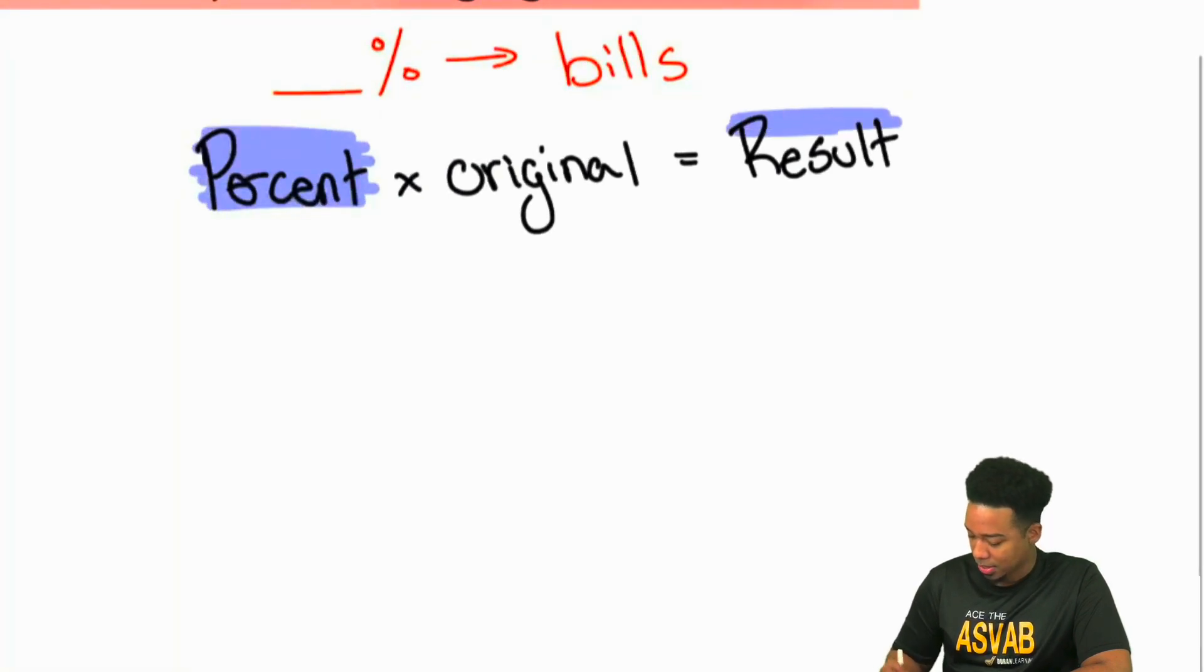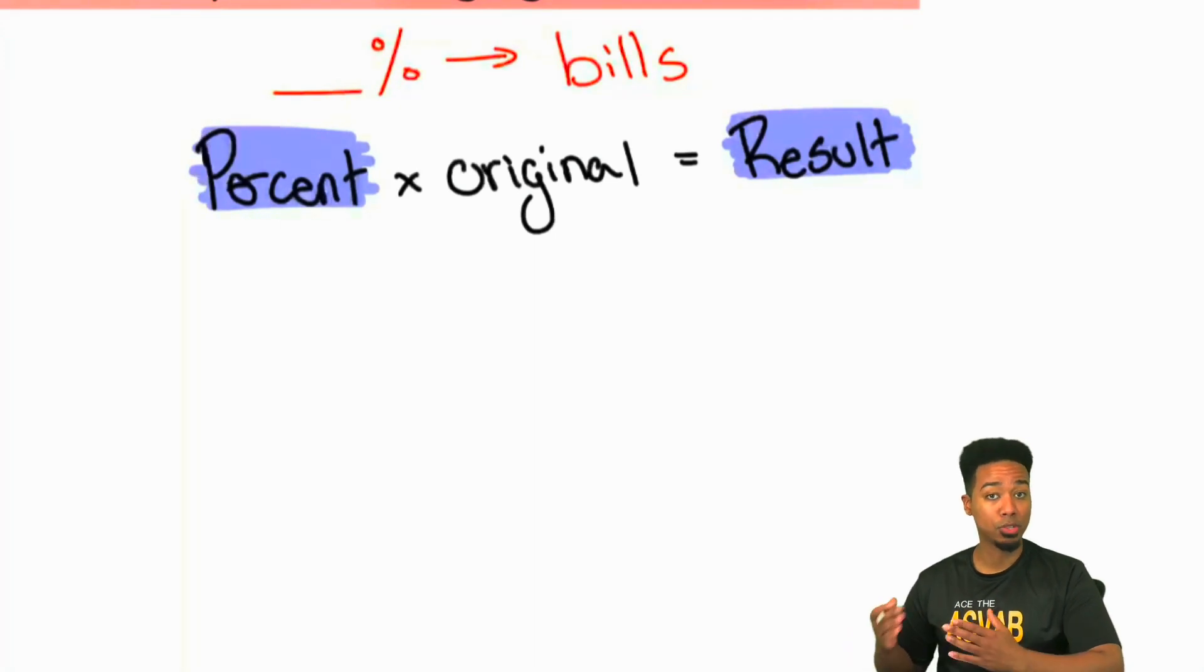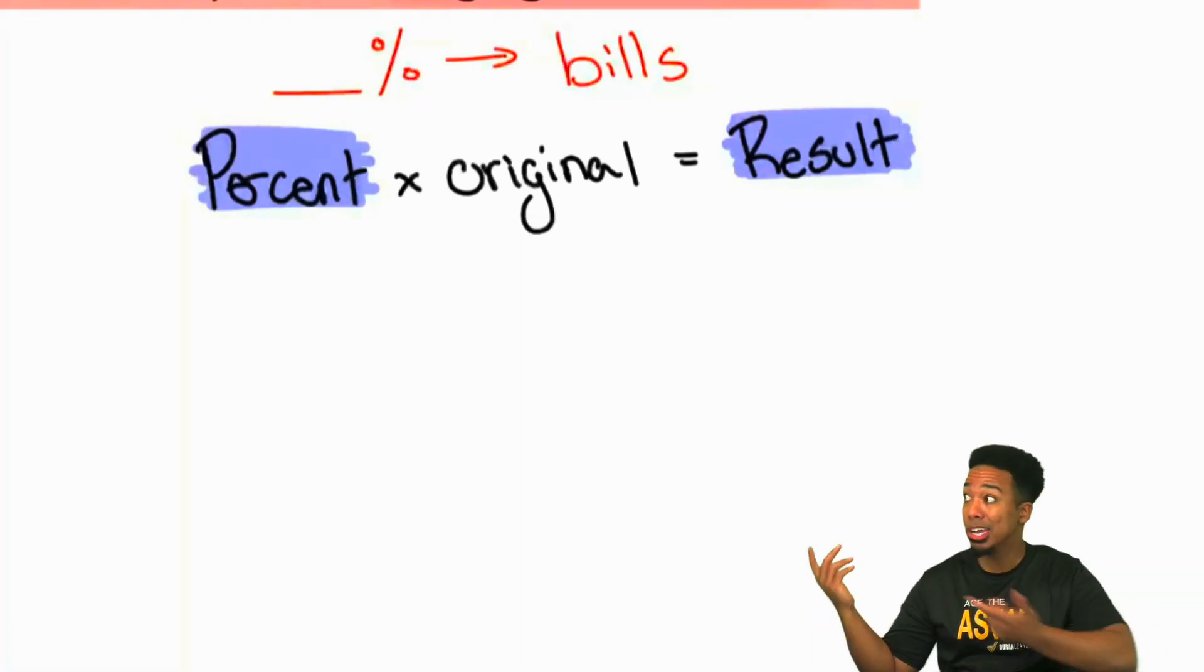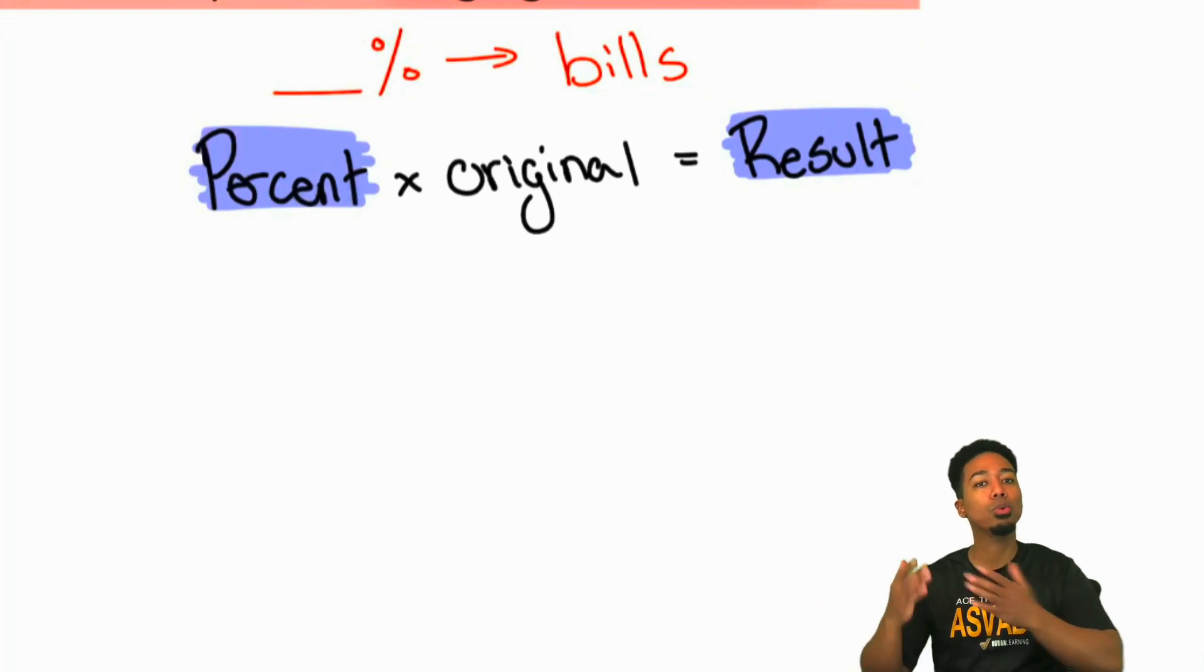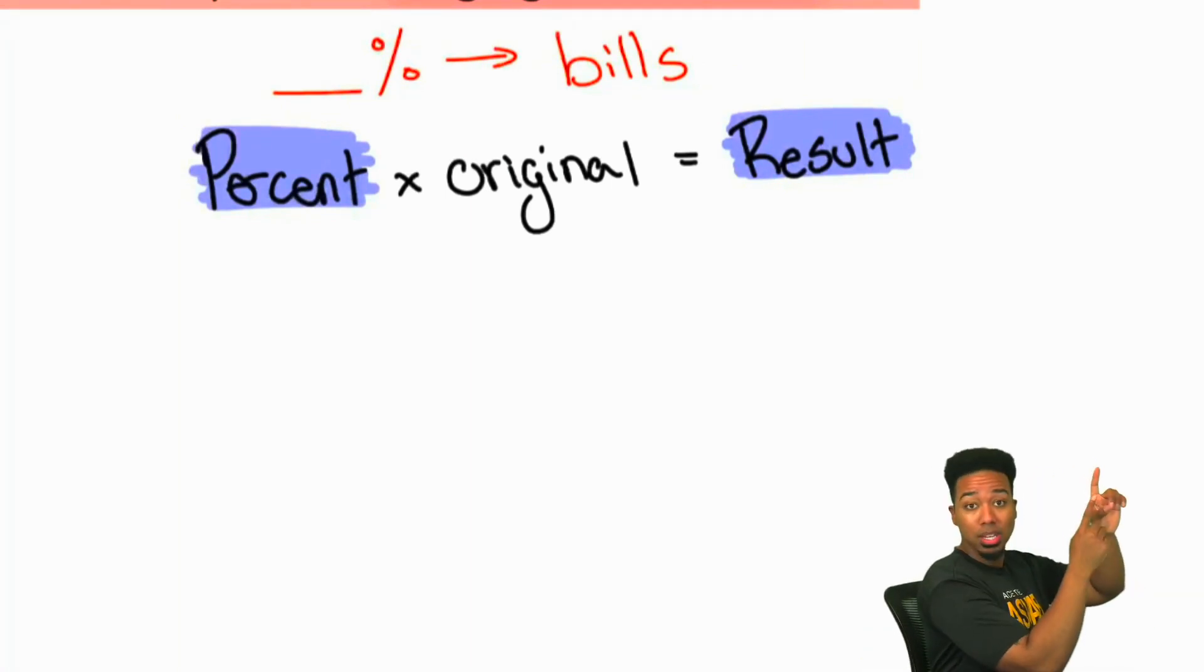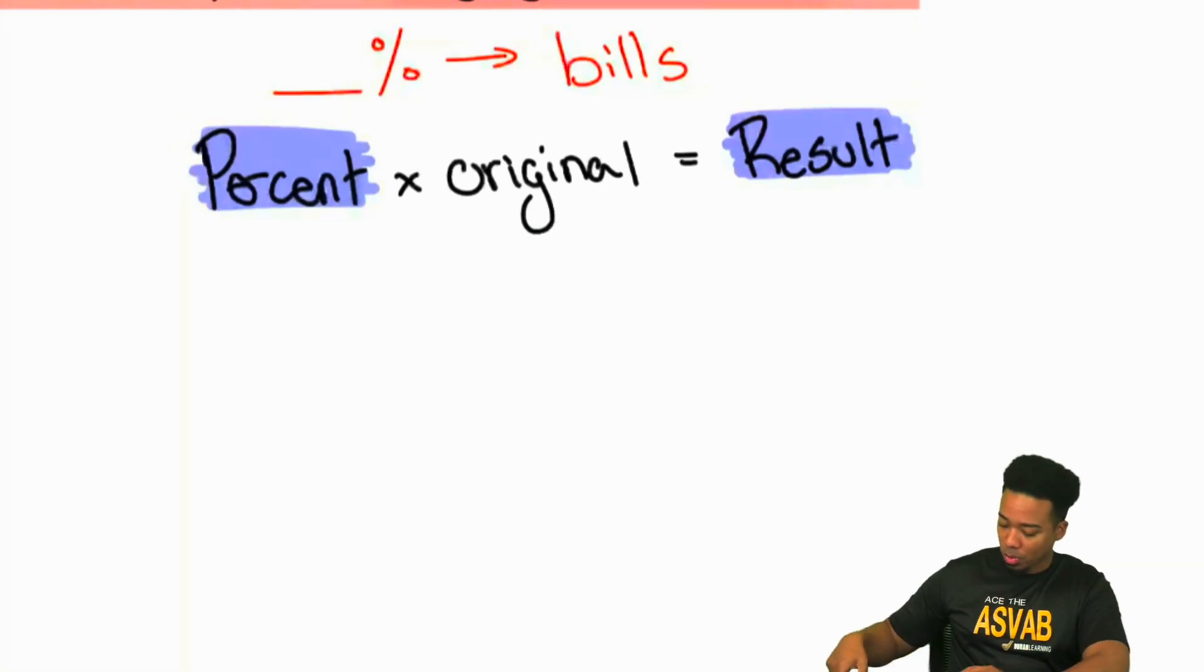Basically, everybody, here's the cool thing about percentages: the percent and the result, they represent the same thing. They're just different forms. The percent is the form of a percent, but the result could be whatever it is that you're talking about. Here we're talking about money, so the percent that represents your bills in this formula is going to also be the result that represents the amount that your bills represent. So let me write this down for you so you can just copy this here: the percent you apply.